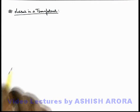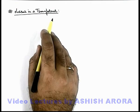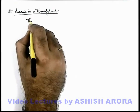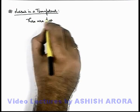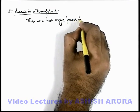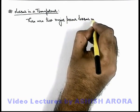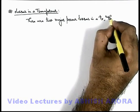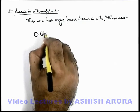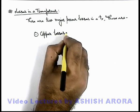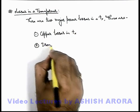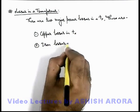So now we'll study about the losses in a transformer. We can talk about the power losses in a transformer — there are 2 major power losses in a transformer. The first one is copper losses in a transformer and the second one is iron losses in a transformer.